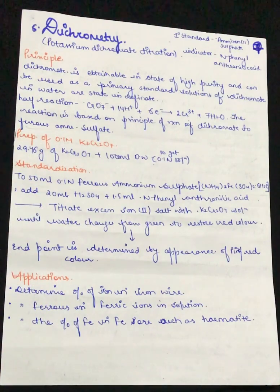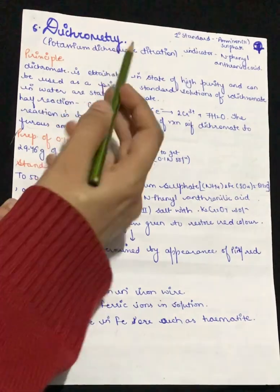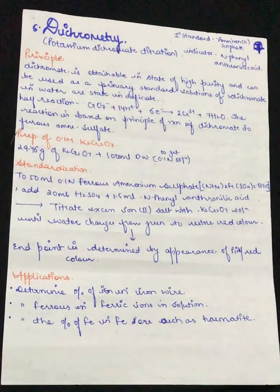In this video we are going to study dichrometry. Dichrometry is a reaction that involves potassium dichromate titration. This is the first thing that we need to remember about potassium dichromate titration.